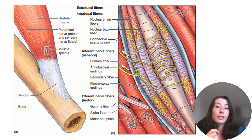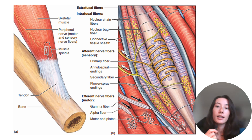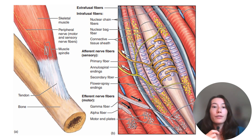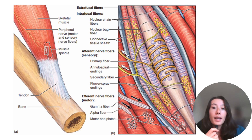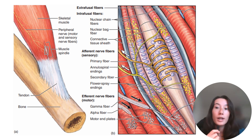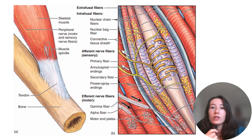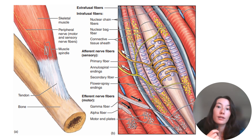So within the intrafusal fibers, the two types of fibers involved are the nuclear chain fibers and the nuclear bag fibers. Both have nuclei in the middle of the fiber, and both have the contractile components more distally. Now ultimately, if you're looking at the big picture, there are a ton of extrafusal fibers with intrafusal fibers in parallel to them. They're just interspersed throughout the muscle belly.